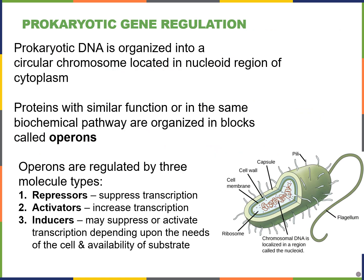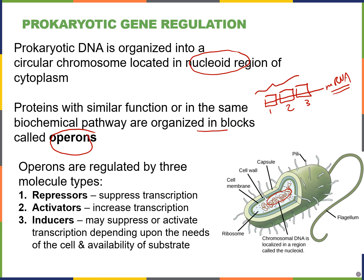The first thing we'll look at are examples of prokaryotic gene regulation, which occurs at the transcriptional level. Prokaryotic DNA is found in the nucleoid region of the cytoplasm. Interestingly, a single messenger RNA molecule in prokaryotes can encode genes for several different proteins — in contrast to eukaryotes where one mRNA usually means one protein. These organized blocks of genes in prokaryotes are known as operons, which can correspond to a functional biochemical pathway in the cell.